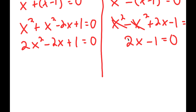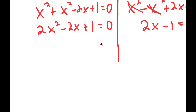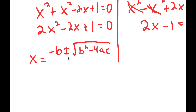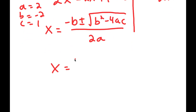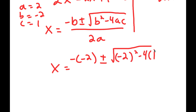Now I'll solve these two equations. Starting with 2x squared minus 2x plus 1 equals 0, I'll use the quadratic formula: x equals negative b plus or minus the square root of b squared minus 4ac, all over 2a. In this case, a is 2, b is negative 2, and c is 1. So I get x equals negative of negative 2, plus or minus the square root of negative 2 squared minus 4 times 2 times 1, all over 2 times 2.